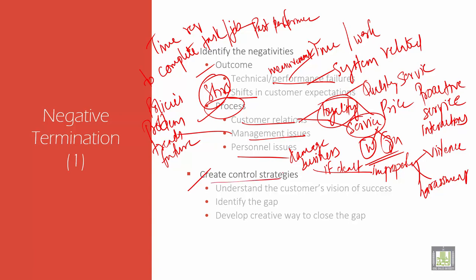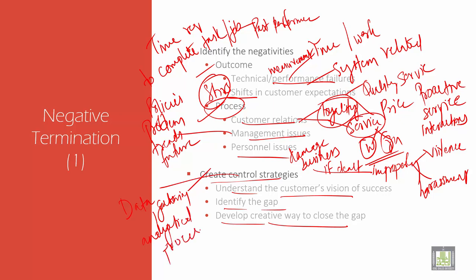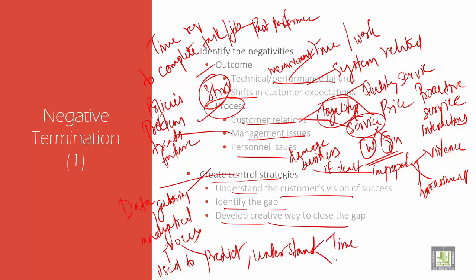Create control strategies. These strategies involve: understanding the customer vision of success, identifying the gap, and developing a creative way to close the gap. The strategies talk about data gathering, an analytical process, and how to predict — it is used to predict and understand influence based on time and cost. Vision is actually a roadmap indicating what the company wants to be by setting a defined direction for the future.